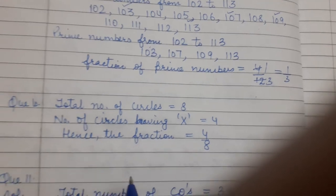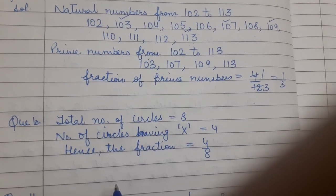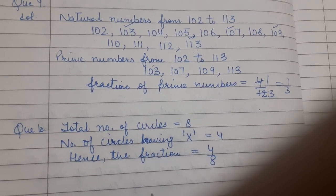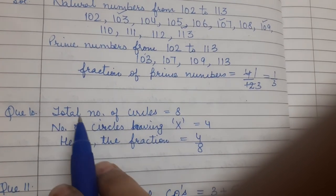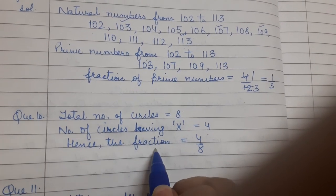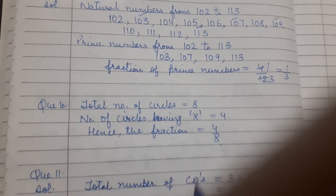In 10th question, there is a figure given in the book and we have to write down the fraction of circles with X's in them. Those circles in which X is marked. Total number of circles is 8. Number of circles having X is 4. So fraction will be 4 out of 8. So this is the fraction.